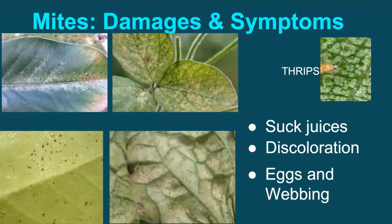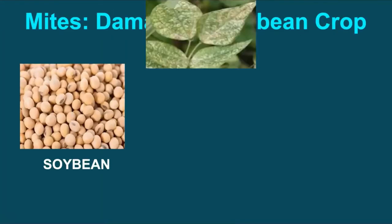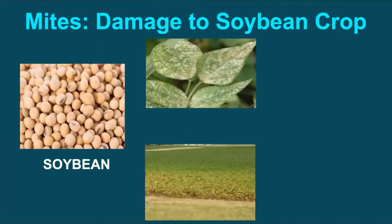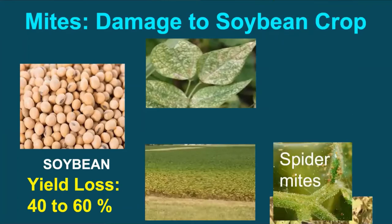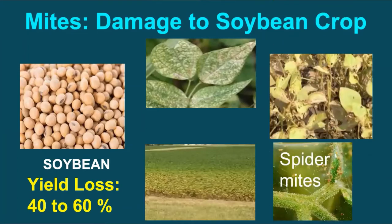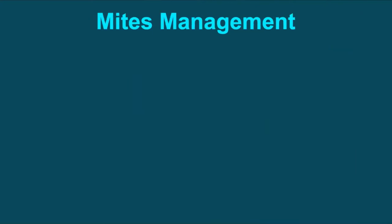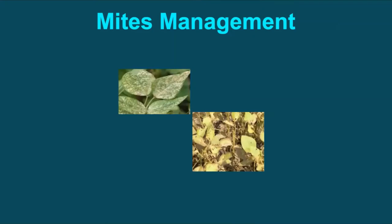As mite infestation develops, leaves may be damaged severely. In soybean, mite injury occurring during late vegetative and early reproductive growth stages reduces yield by 40 to 60 percent. Spider mites can cause yield reduction as long as green parts are present in the field. Besides causing damage to plants, mites are also vectors of viral diseases like wheat streak mosaic and pea mosaic.